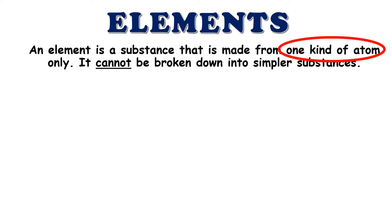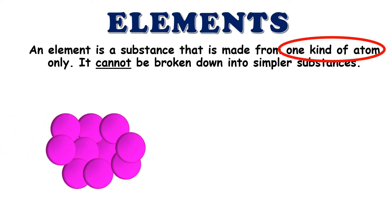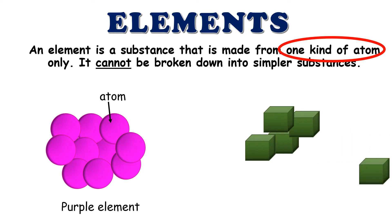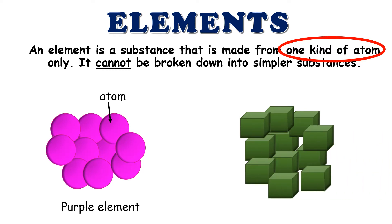For example, we have here circles of the same size and color. These are atoms of purple element. Again, these are squares of the same size and color. These are atoms of green element.